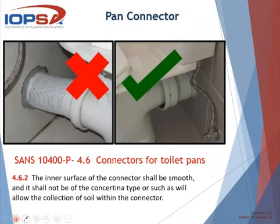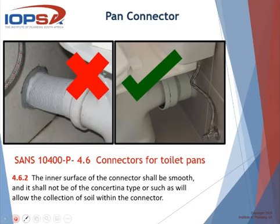Looking at pan connectors: SANS 10400P states the inner surface of the connector shall be smooth and shall not be of the concertina type, nor shall it allow the collection of soil within the connector. No concertina-type or rough surface connector is allowed — that is non-negotiable.